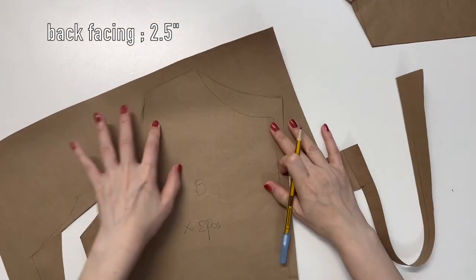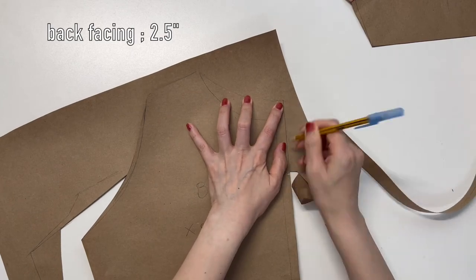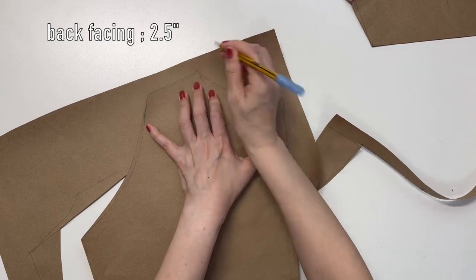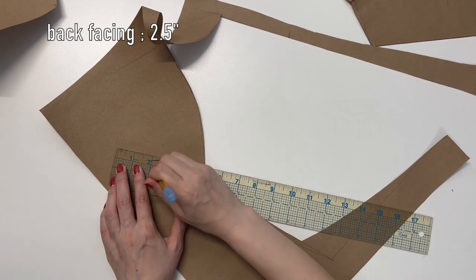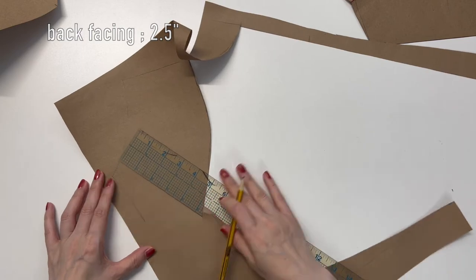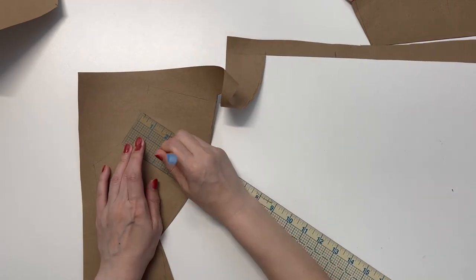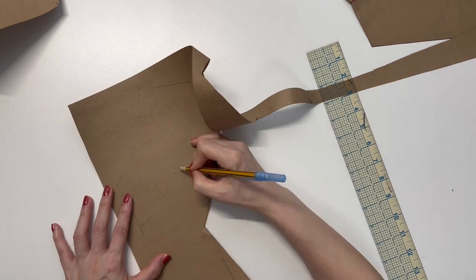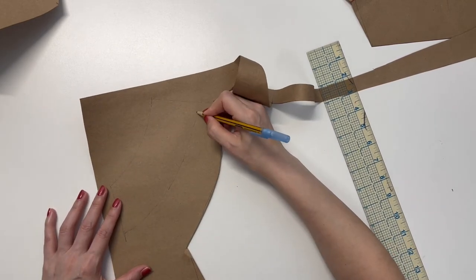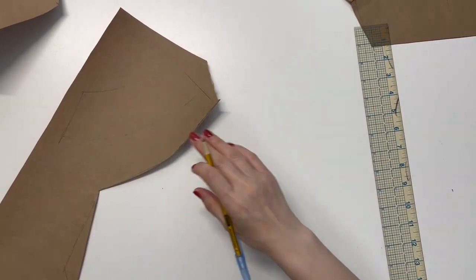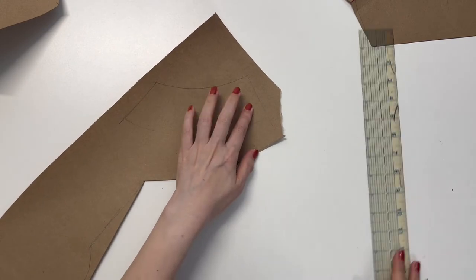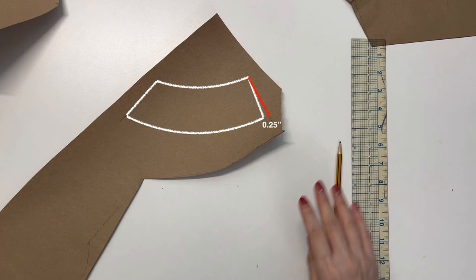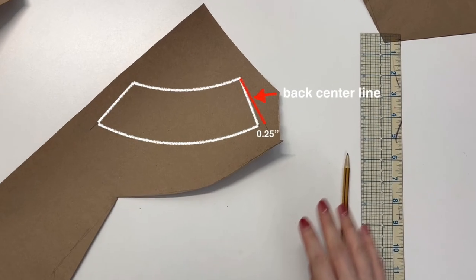Back facing is the same process. Copy the neckline of the back panel and then draw the line two and a half inches wide. One thing to be aware is that when drawing the sideline, draw a quarter inch narrower. You can get a much neater finish when sewing.